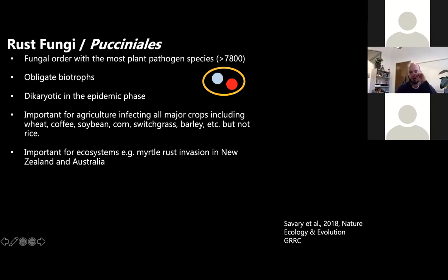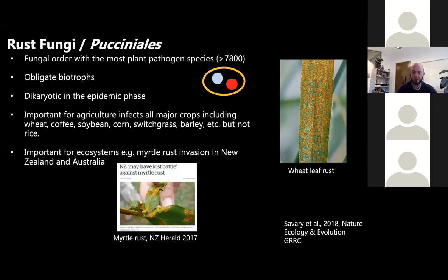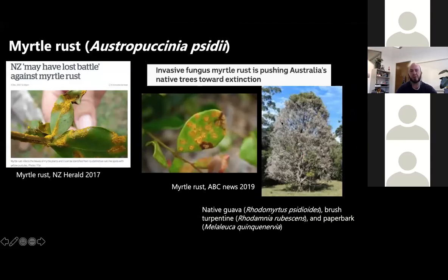Rusts aren't only competing for energy sources — they can also threaten whole ecosystems. Myrtle rust is one invasive disease in New Zealand and Australia that really threatens the ecosystem. Rusts can also be quite striking visually: wheat leaf rust produces light brown pustules, while myrtle rust has a really golden color — the spores literally look like gold, even though it's not good for the ecosystem.